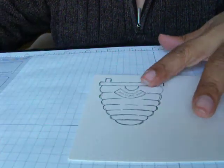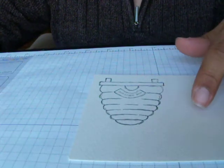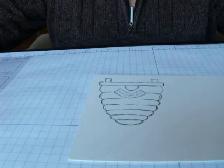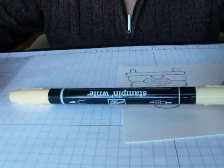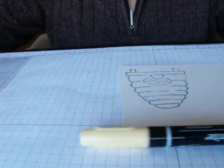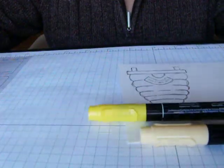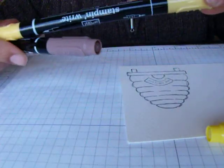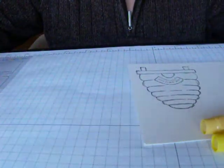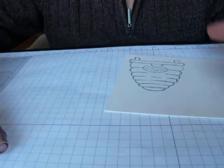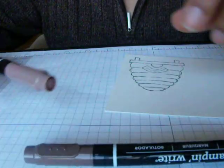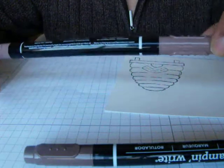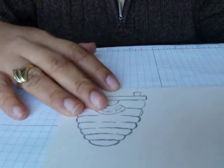After we stamp the image with StazOn, we pick up the markers that we want to use to watercolor. In this instance I'm going to be using Barely Banana, Yo-Yo Yellow, So Saffron, and then to highlight I'm going to use Chocolate Chip and Close to Cocoa.